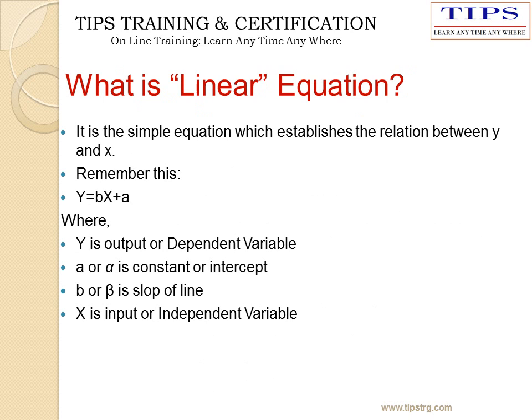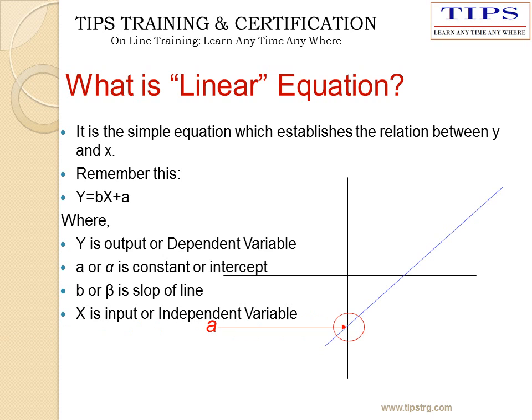What is linear regression? It is a simple equation that establishes the relationship between Y and X, represented as y equals bx plus a. Here, Y is the output variable, a is a constant or intercept, b or beta is the slope of the line, and X is the input or independent variable. This is the graphical representation of the linear equation.